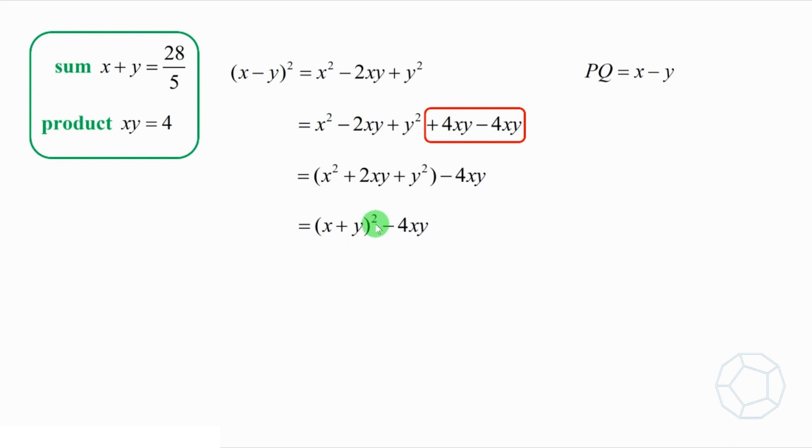Everything is ready. We can put the values of the sum and the product inside. It is equal to 384 over 25. So PQ is equal to X minus Y, which is the square root of 384 over 5. Simplify, the answer is 8 times square root 6 over 5.